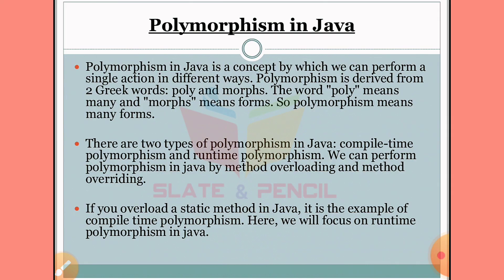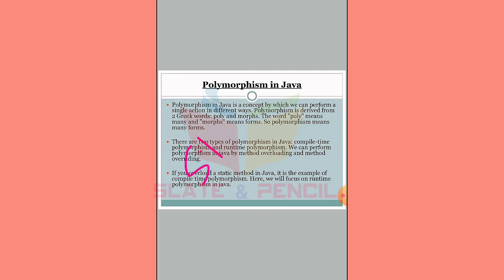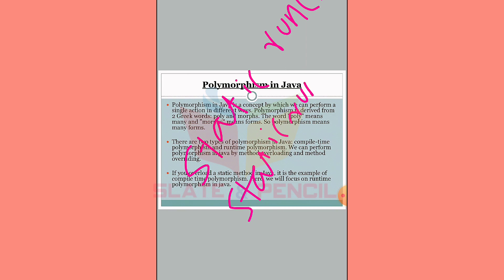If you overload a static method, we declare a static method and perform the overload. The static keyword method is applied to our object.